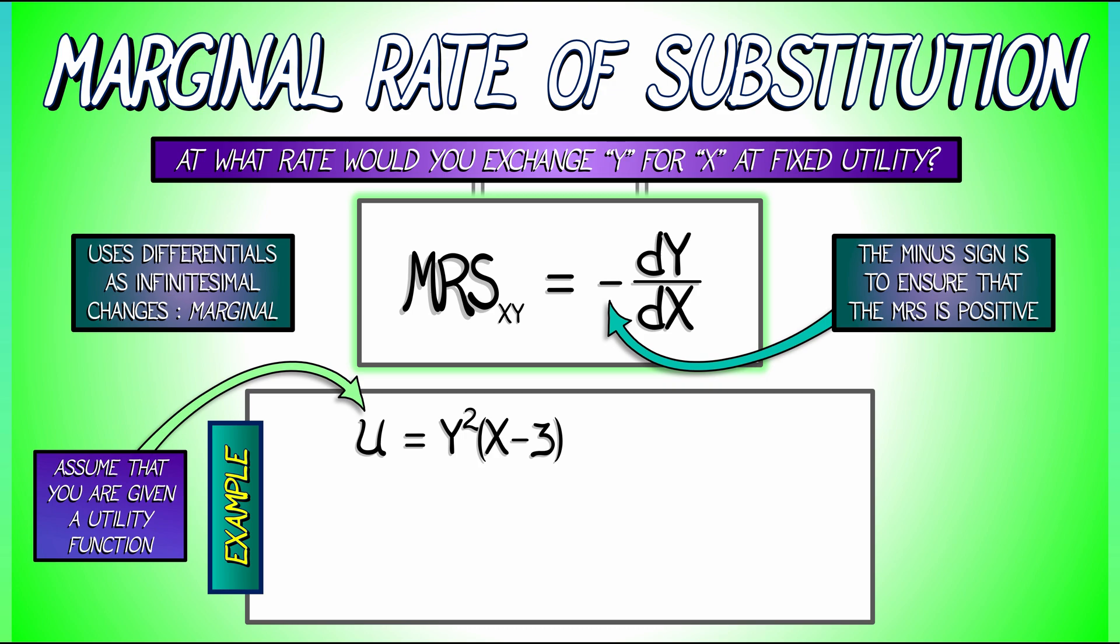To compute the MRS, what we do is we differentiate implicitly, applying that implicit differentiation operator D. That gives us dU equals, by the product rule, 2Y dY times X minus 3 plus Y squared dX.